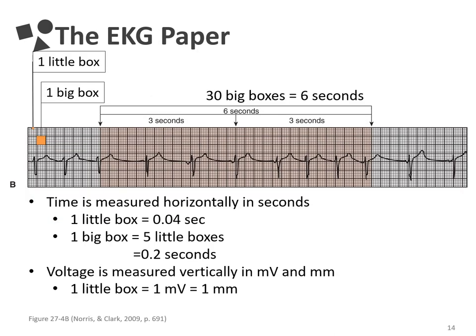The last thing I'm going to talk about in this lecture is the EKG paper. This is the physical paper that is either printing out of the bedside cardiac monitor or the EKG machine. It has a standard grid with standard size boxes — there are little boxes and big boxes. Each big box contains five little boxes horizontally and five little boxes vertically. Time is measured horizontally in seconds: each little box represents 0.04 seconds, meaning each big box represents 0.20 seconds. We typically interpret EKG rhythms using a 6-second strip, which is 30 big boxes long — 6 seconds divided by 30 gives 0.2 seconds, the width of each big box. Voltage is measured vertically and reported as millivolts or millimeters; one little box is one millimeter tall.